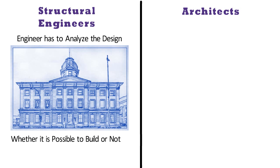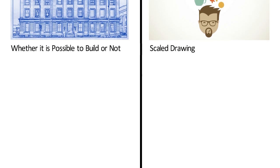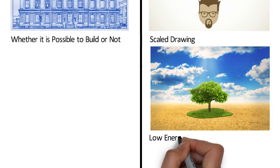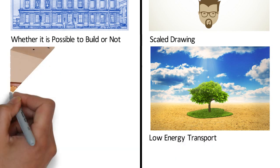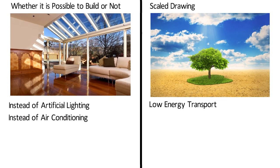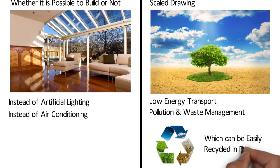In designing any structure, an architect has to plan out ideas by making a scaled drawing. The architect also provides initiatives in a wider environmental sense such as making provision for low energy transport, natural daylighting instead of artificial lighting, natural ventilation instead of air conditioning, pollution and waste management, use of recycled materials, and employment of materials which can be easily recycled in the future.